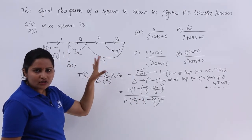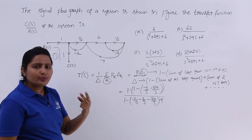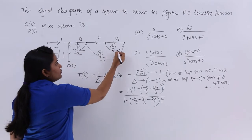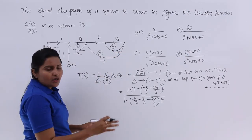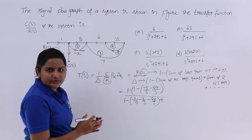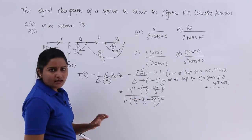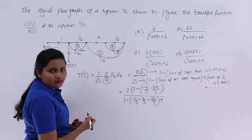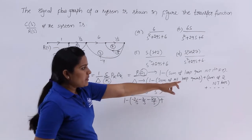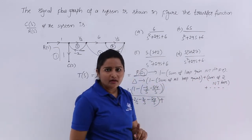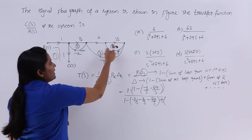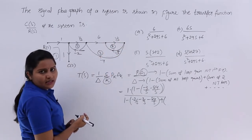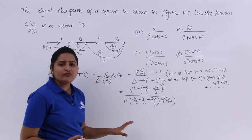Next we consider the sum of 2 non-touching loops. Observing the loops: loop 1 and loop 2 do not share common nodes, so they are non-touching. Loop 1 and loop 3 are touching, and loop 2 and loop 3 are touching, so only one non-touching pair exists. The gain of that pair is (−2/S)×(−3/S) = 6/S². So delta = 1 − (−29/S) + 6/S² = 1 + 29/S + 6/S².